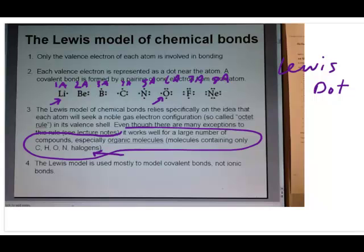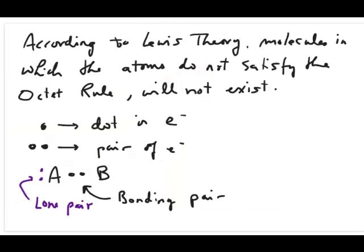The main point to get across with the Lewis model is that if you have molecules in which atoms do not satisfy the octet rule, they will not exist. Only molecules that satisfy the octet rule will exist. We'll do an example of this in the next slide, but before we do that, let me just get through some terminologies.